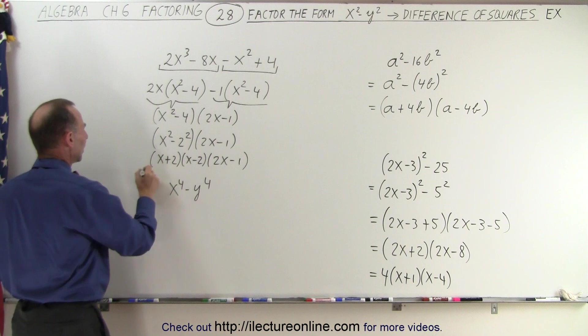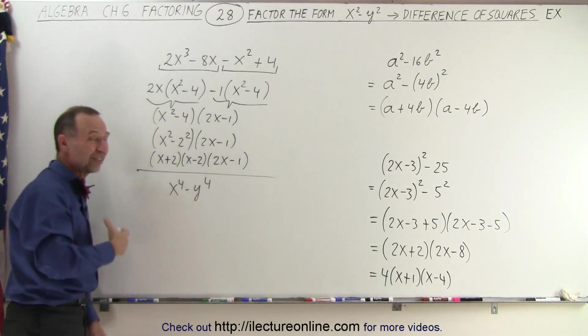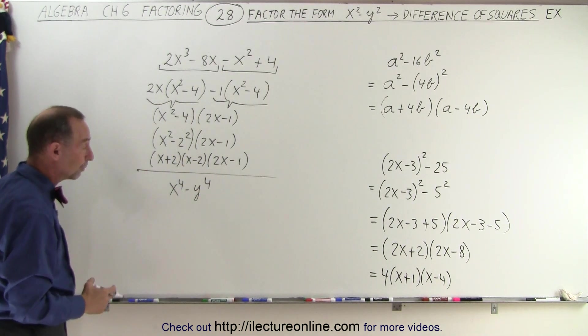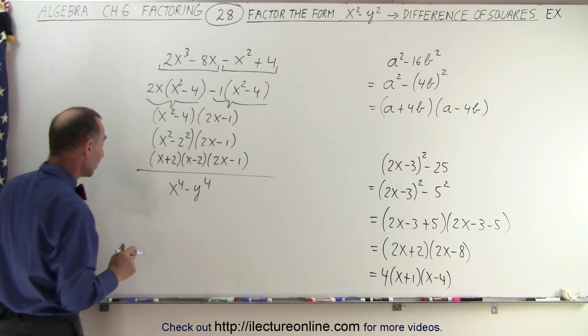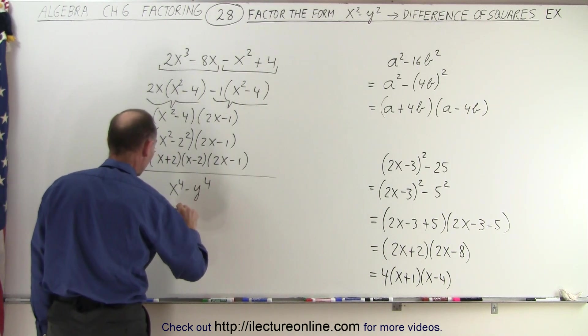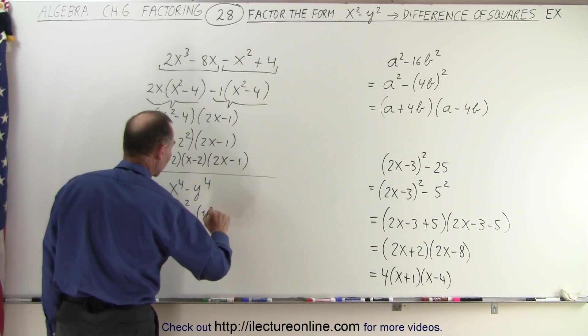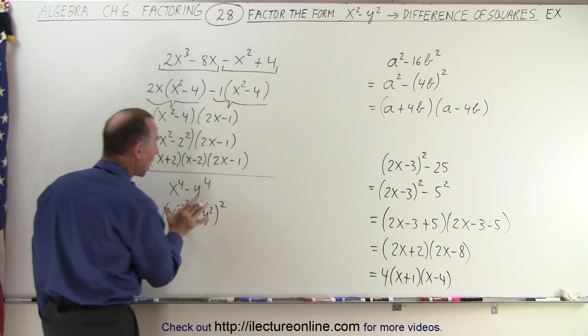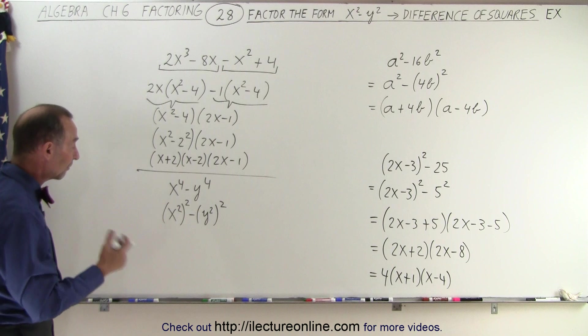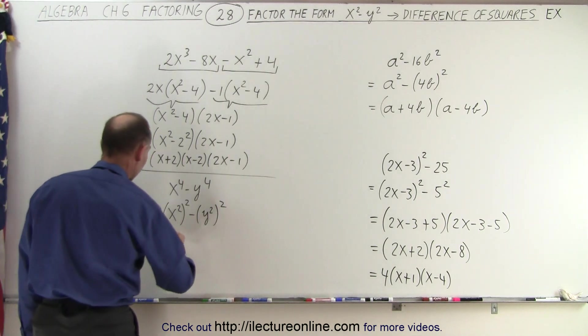Here, you take a look at this and go, well, by no means that the difference of squares because it's x to the fourth minus y to the fourth, but you can actually write this as follows. This can be written as x² to the second power minus y² to the second power. And now it has the proper format of the difference of squares.